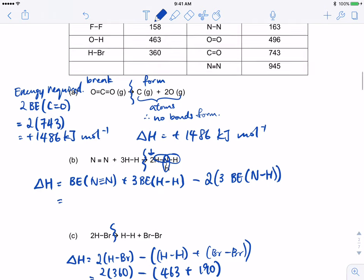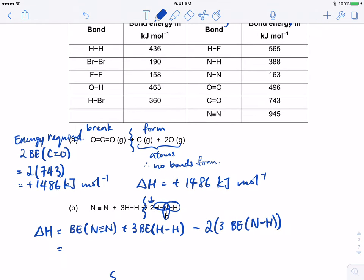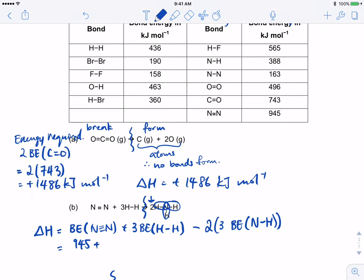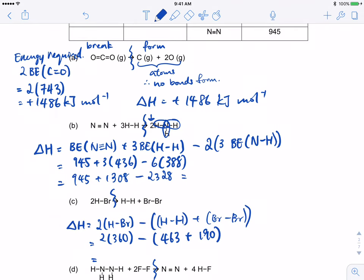If you do this correctly, it will be 945 plus 3 times 436 minus 2 times 3 times 388, that will leave us with negative 75 kilojoules per mole.